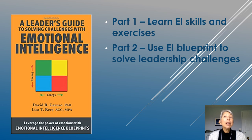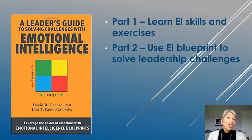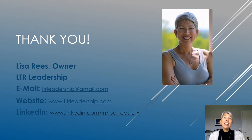We wrote our book based on the ability-based model of emotional intelligence. In part one of our short book, we defined the four abilities of EI and focus on enhancing EI skills. And in part two, we describe common leadership challenges that apply the four EI skills to solve these challenges using what we call the EI blueprint. So there you have it — now when someone asks you the difference between EI and EQ, you can tell them with confidence.